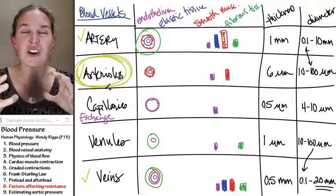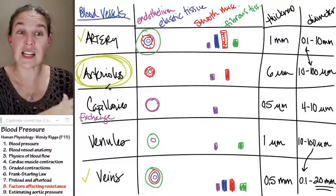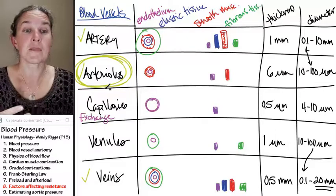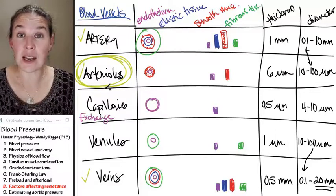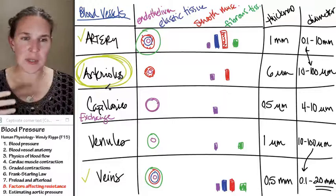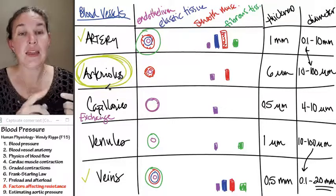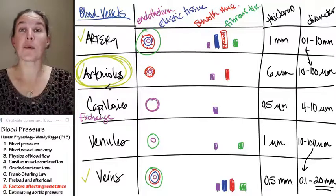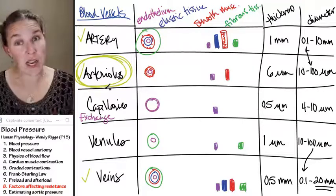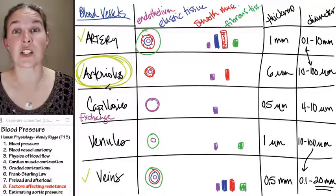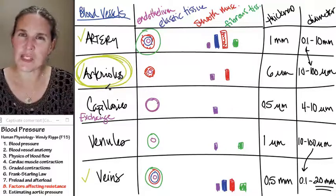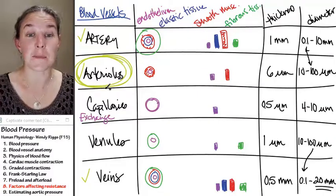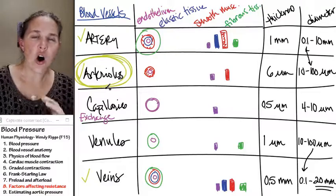They also will respond to different chemicals. So paracrine chemicals from neighboring cells that are doing various jobs. If they're producing a great deal of carbon dioxide, indicating a lot of metabolism, a lot of activity happening, then those arterioles may vasodilate to allow more blood in to get rid of the carbon dioxide and bring in more oxygen. Increased metabolism can be indicated by the amount of carbon dioxide in the blood.